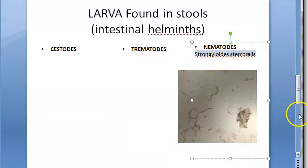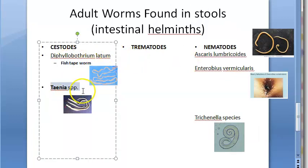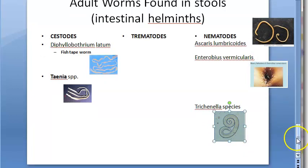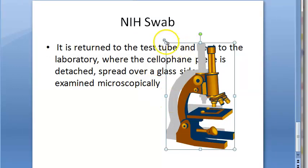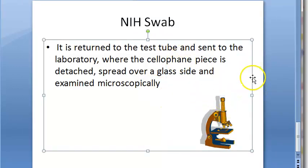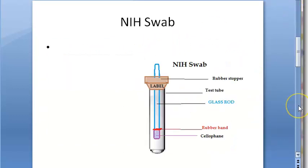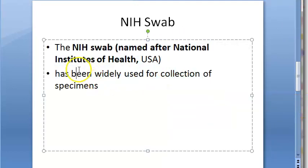You can also see Strongyloides and Cercaria larvae in stools, and even adult worms themselves — such as fish tapeworm, Taenia worm, Ascaris, Enterobius vermicularis adult worm, and Trichinella species adult worm. This is what you can see if you do this NIH swab, so in all lab diagnoses of these organisms you can write NIH swab.